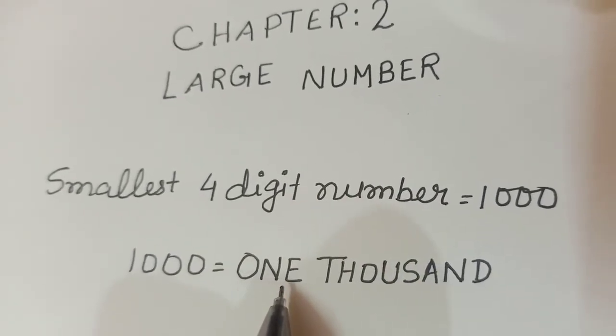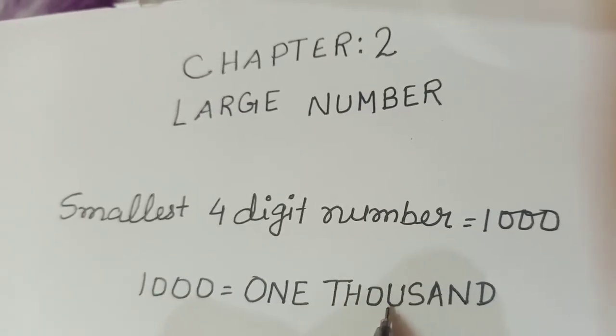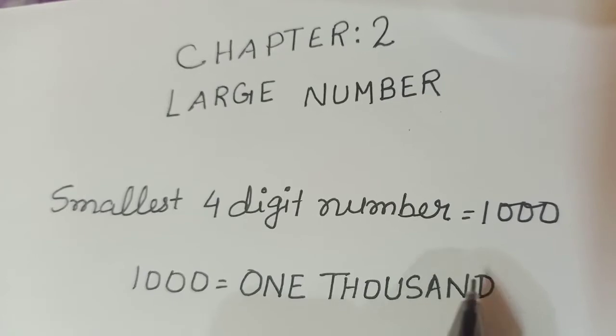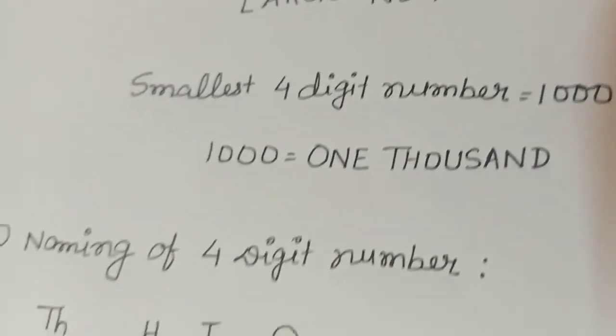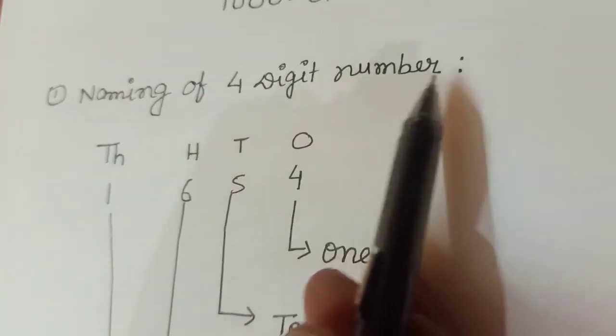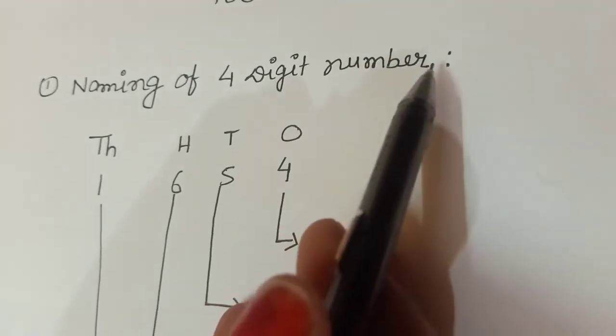O, N, E, T, H, O, U, S, A and D. Our first topic is naming of 4 digit number.